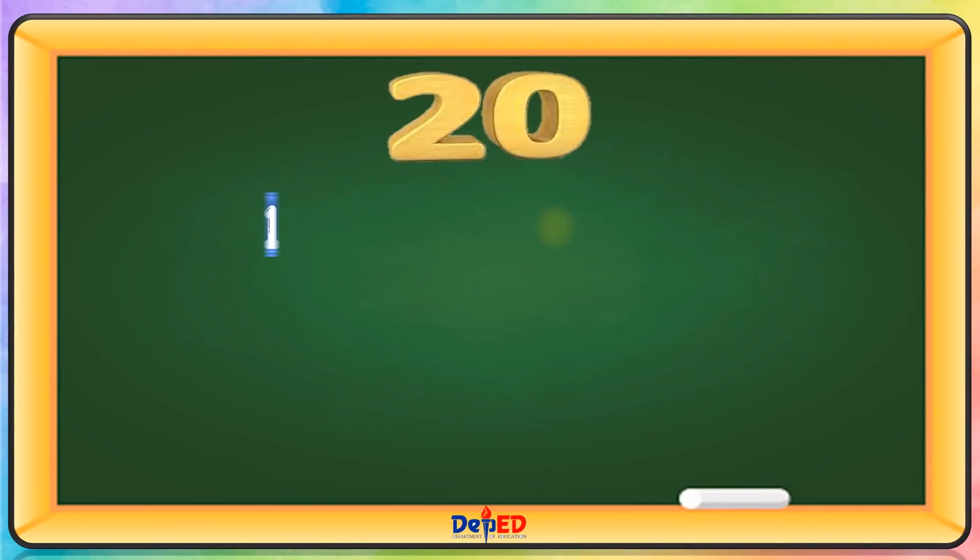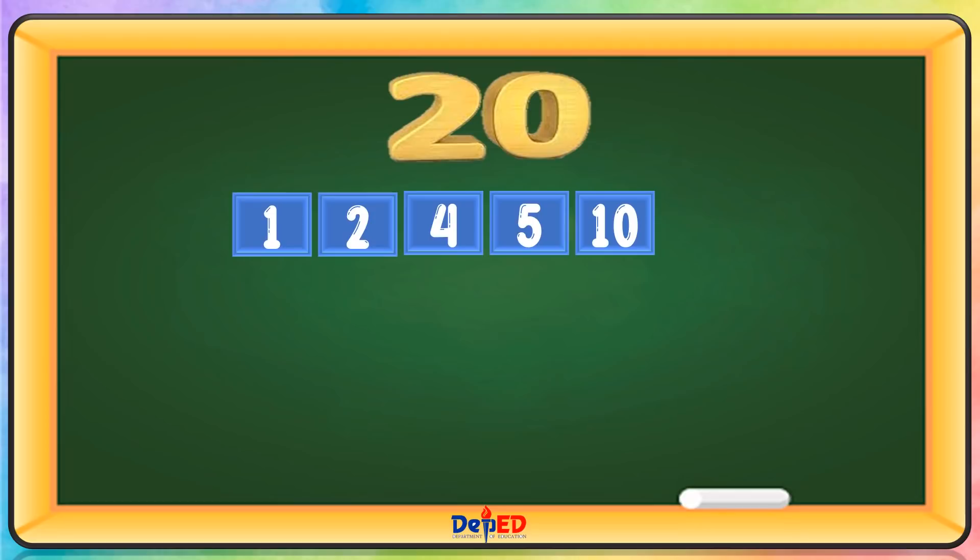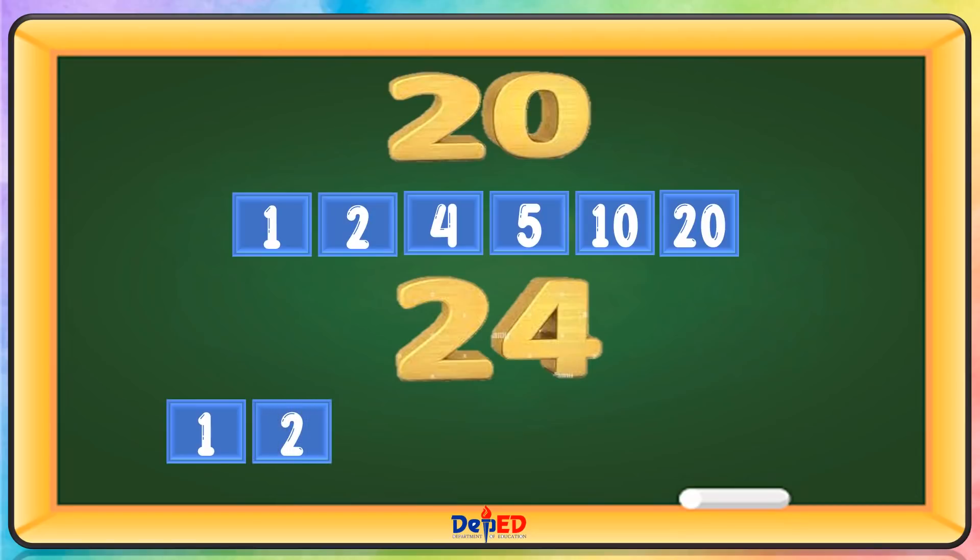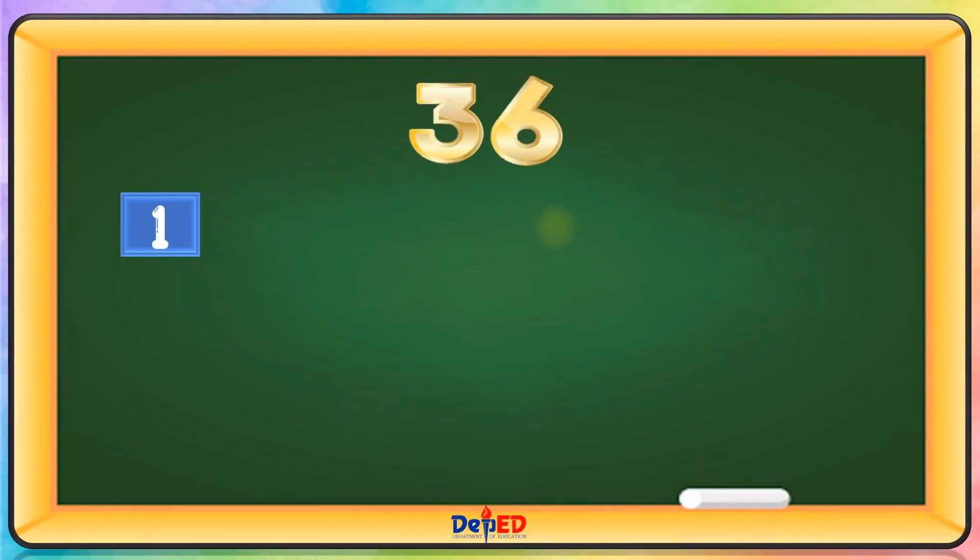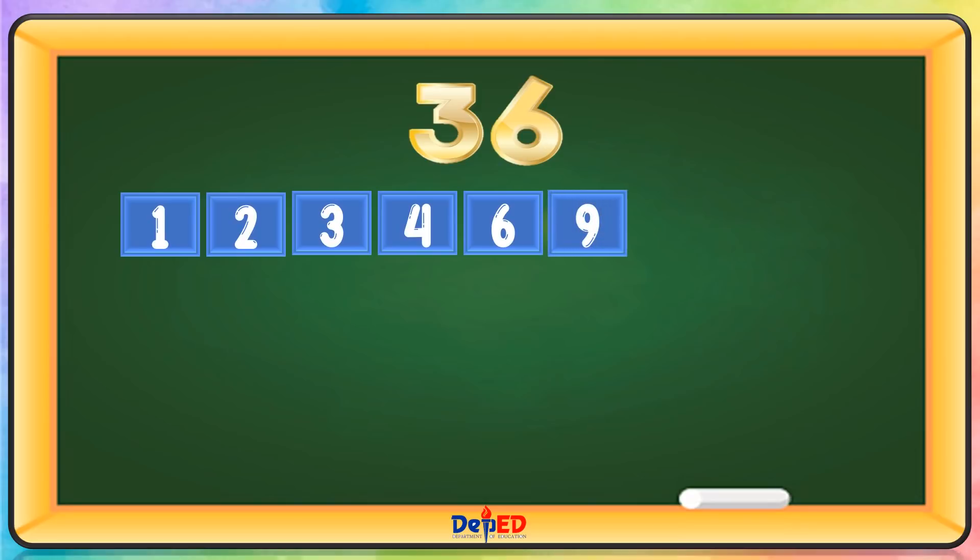Factors of 20: 1, 2, 4, 5, 10, and 20. Factors of 24: 1, 2, 3, 4, 6, 8, 12, and 24. Factors of 36: 1, 2, 3, 4, 6, 9, 12, 18, and 36.